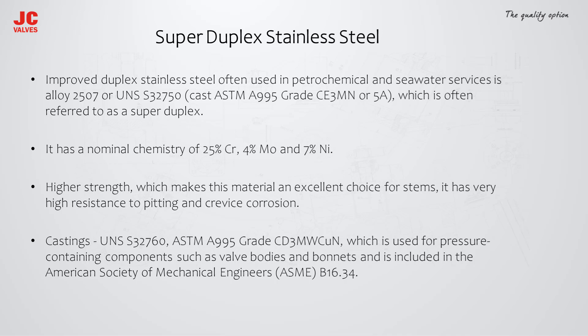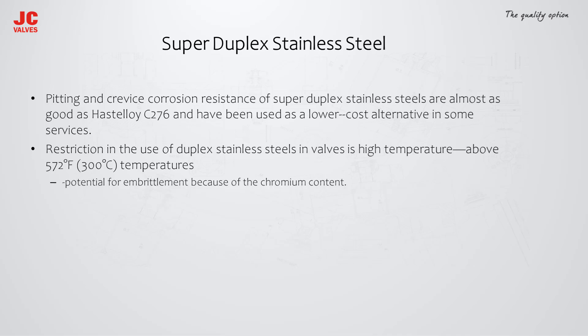A similar version for castings is UNS S32760, ASTM A995 Grade CD3MWCuN, used for pressure-containing components such as valve bodies and bonnets, and is included in ASME B16.34. Selecting the appropriate duplex or super duplex stainless steel requires evaluation of corrosion resistance needs, mechanical properties, and ASME code compliance. One restriction is high temperature above 300°C, which carries the potential for embrittlement because of the chromium content.